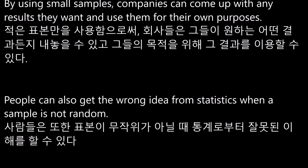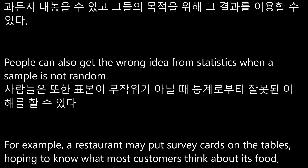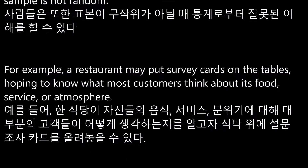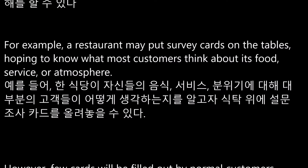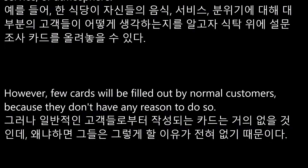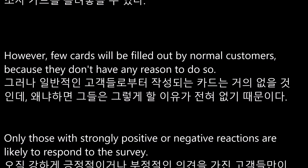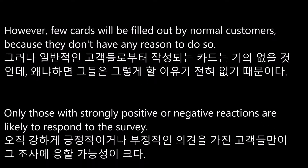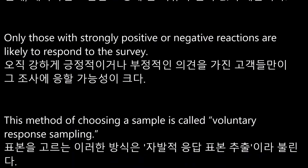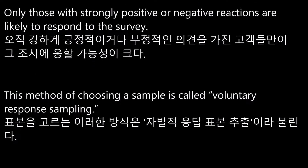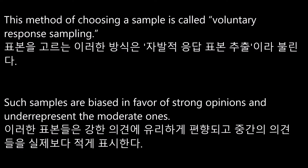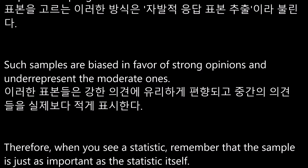People can also get the wrong idea from statistics when a sample is not random. For example, a restaurant may put survey cards on the tables hoping to know what most customers think about its food, service, or atmosphere. However, few cards will be filled out by normal customers because they don't have any reason to do so. Only those with strongly positive or negative reactions are likely to respond. This method is called voluntary response sampling, and such samples are biased in favor of strong opinions and under-represent the moderate ones.